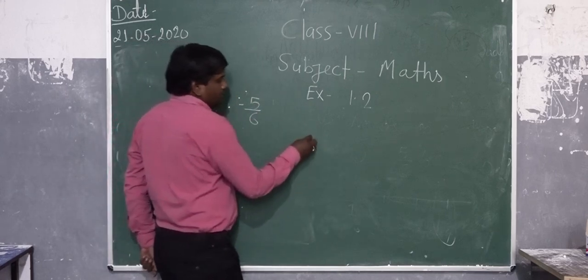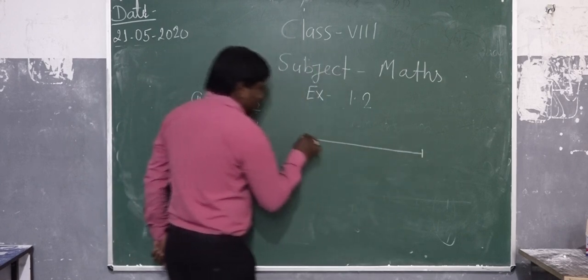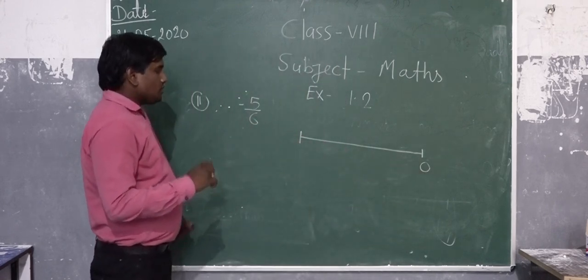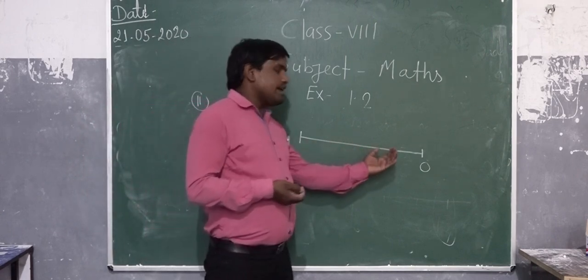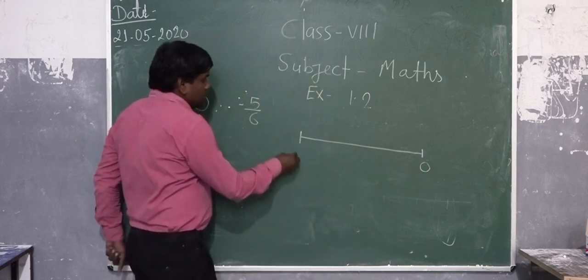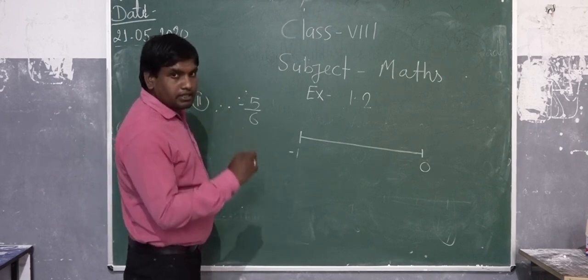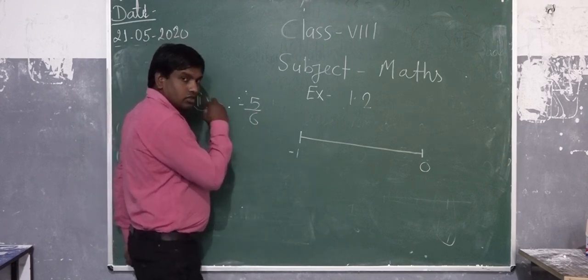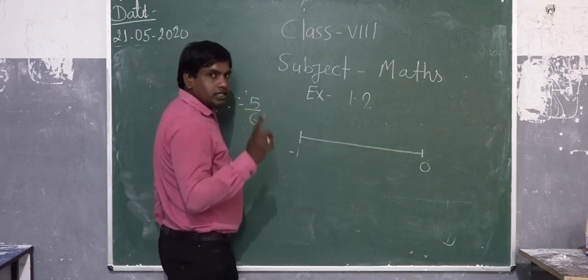This is a minus sign, so negative numbers lie on the left side of 0. We put 0 here and minus 1 here. The next step is to check the denominator. Here the denominator is 6, so we divide this line into 6 equal parts.